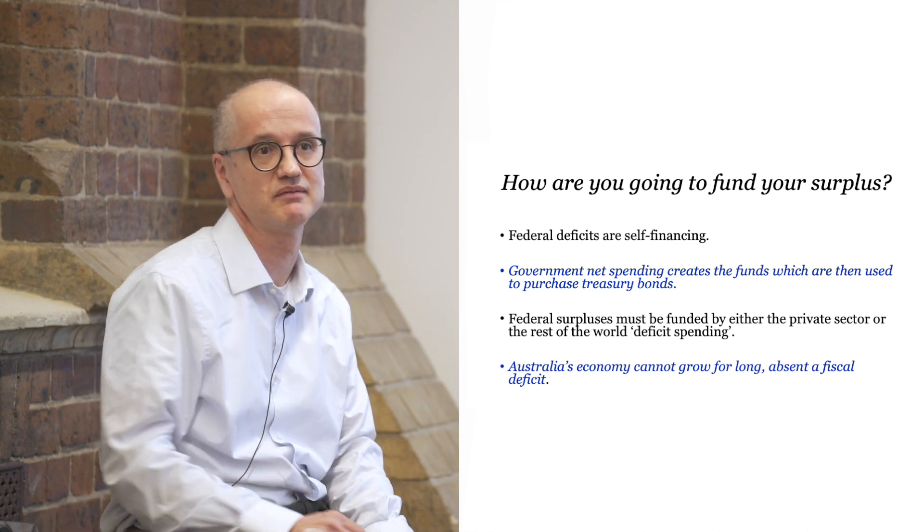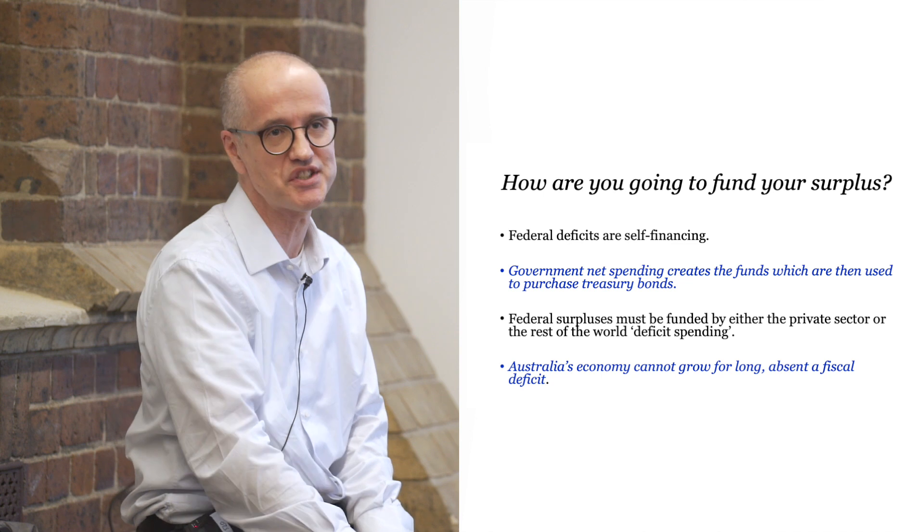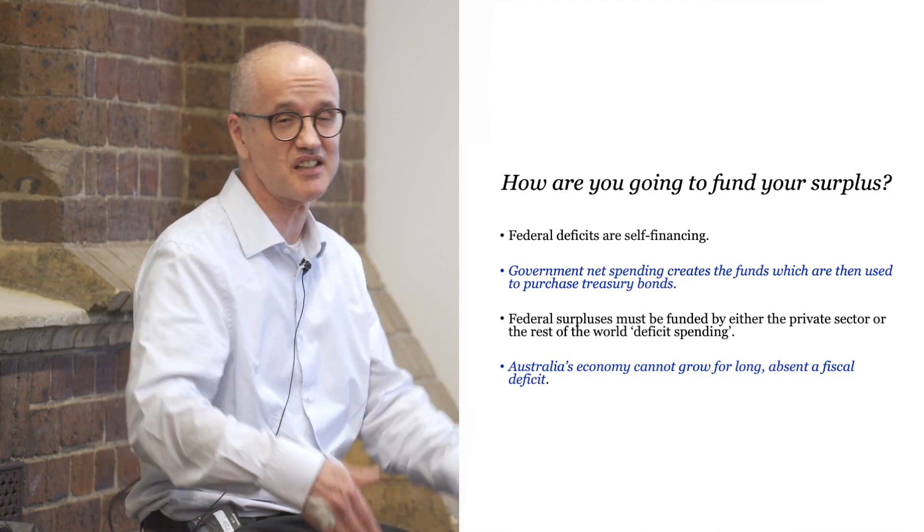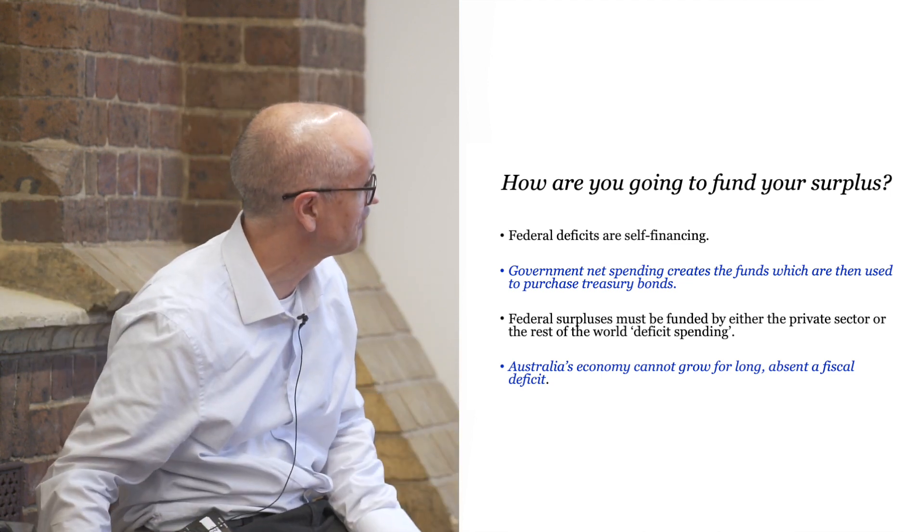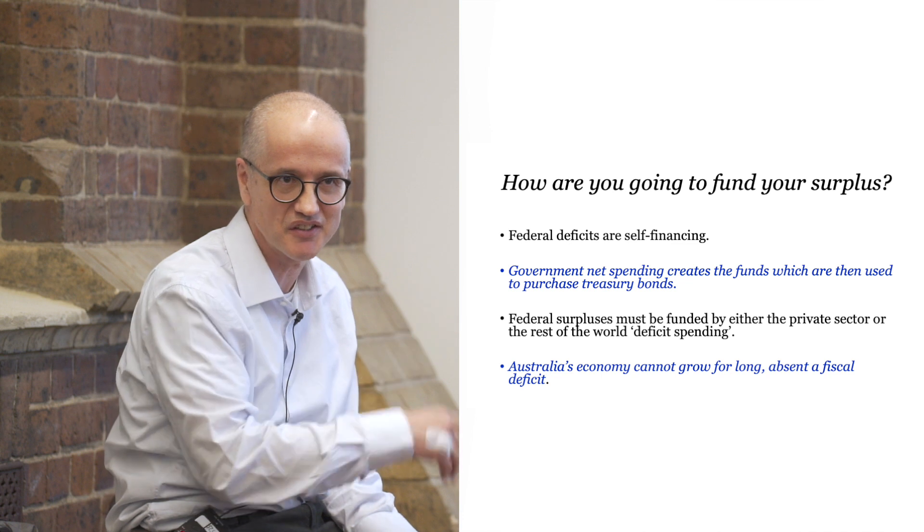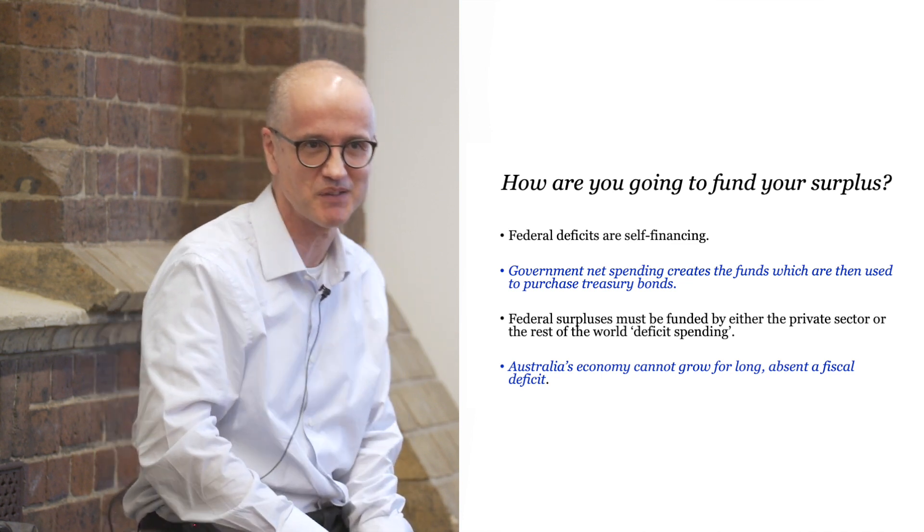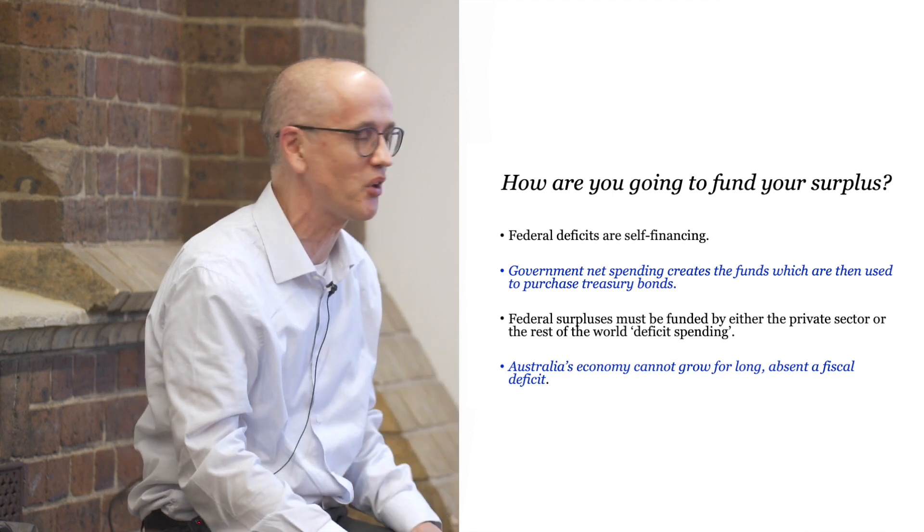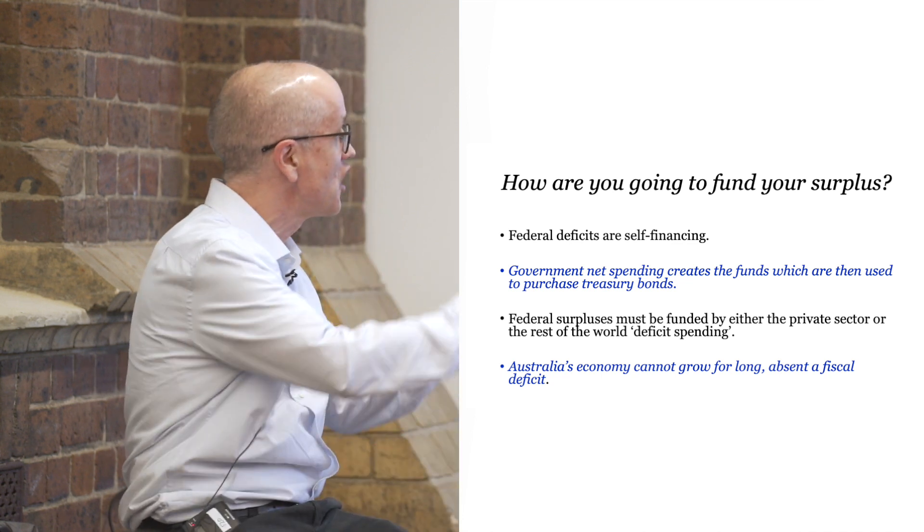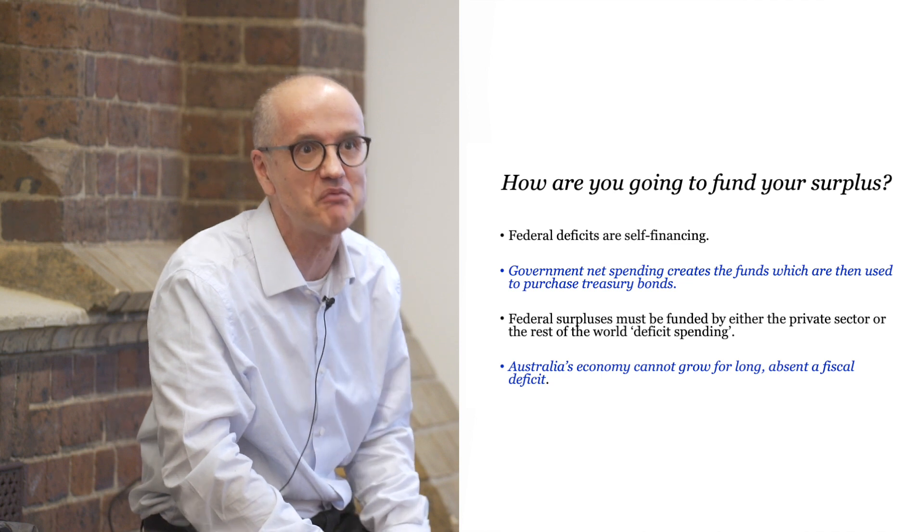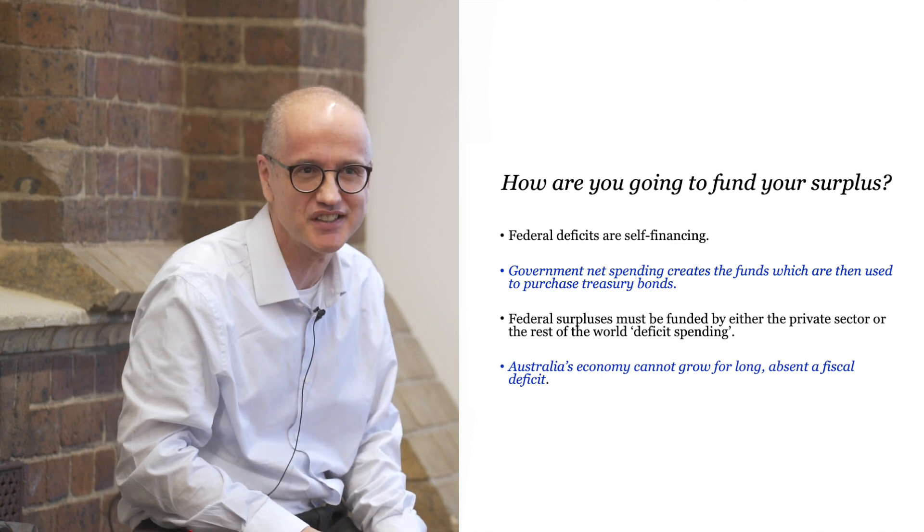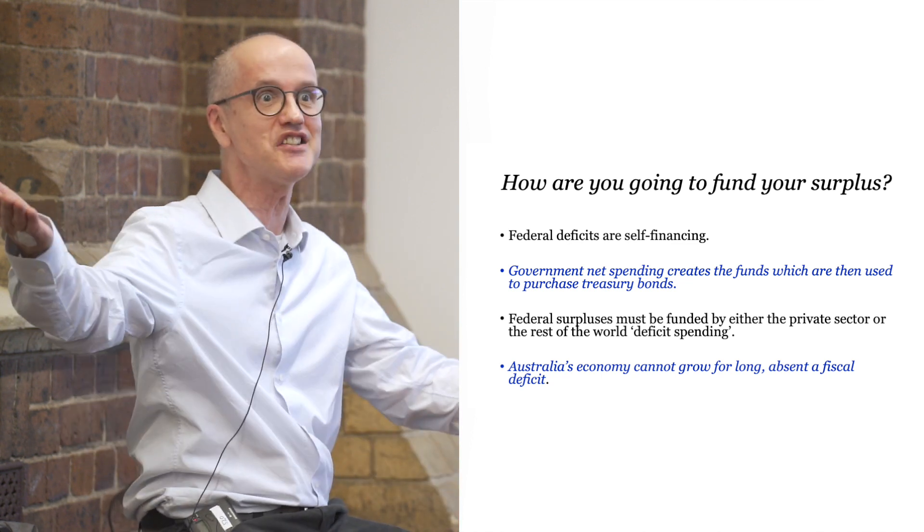Deficits are self-financing. What do I mean by that? Every time the government spends, they create dollars. When they tax, they destroy dollars. If they spend more than they tax, the number of dollars goes up. That's what happens. It's self-financing. Those dollars are converted into treasury bonds for reasons to do with interest rate management. The Australian Office of Financial Management regularly auctions treasury bonds to absorb those dollars because it helps the RBA to manage interest rates. Not because they need the dollars. Why would they need the dollars? They create the dollars.